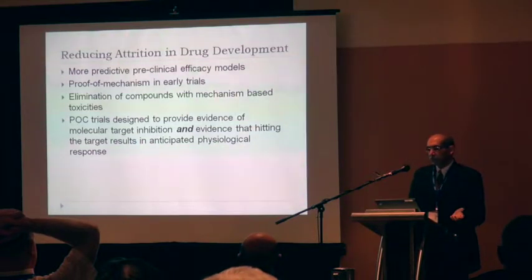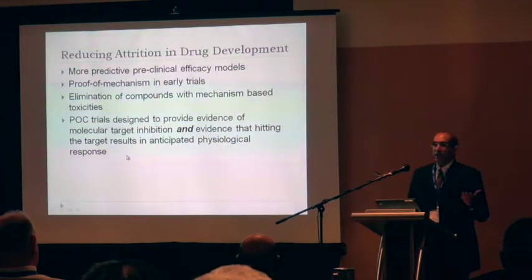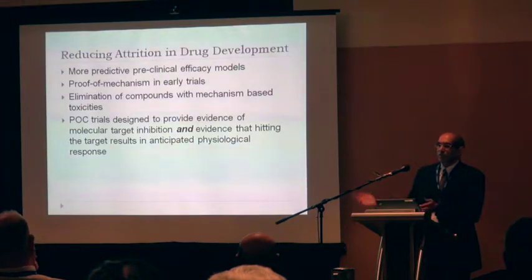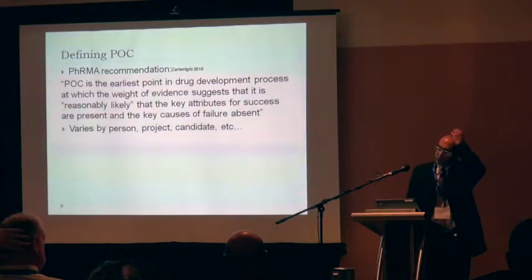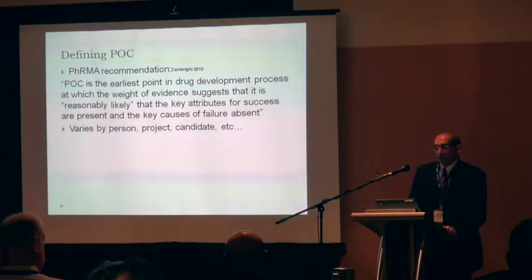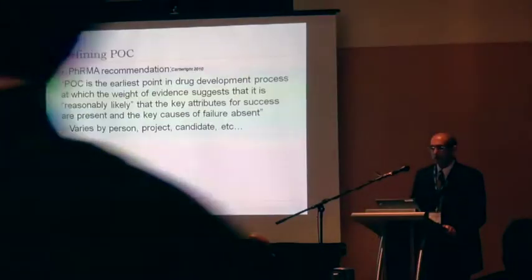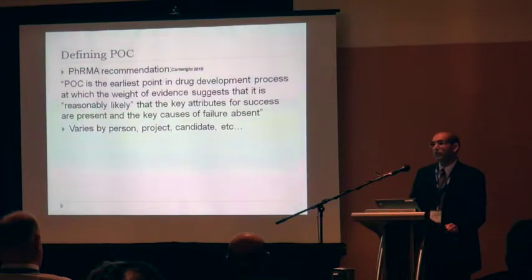One of the ways to reduce attrition in the drug development process is to design POC trials that provide not only evidence that you're inhibiting the target, but also evidence that hitting that target results in a meaningful physiologic response — in oncology terms, a partial response, stable disease extension, or something similar. This leads to the question of how you define proof of concept. It means different things to different people, but I like the definition that says it's the earliest point in drug development where the weight of evidence suggests it's reasonably likely that the key attributes for success are present and key causes of failure are absent.